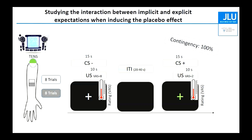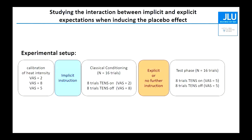We had 100% intensity and a TENS display. Whenever the green cross was presented, the display lit up, so the participant was led to believe the TENS device was functioning. We first calibrated the heat intensity stimulus to give subjective pain intensities of 2, 5, and 8. Then after implicit instructions and classical conditioning — the green fixation cross with TENS on at pain intensity 2, and white fixation cross with pain intensity 8 — one group received explicit instructions: if you see the green cross, you should experience pain relief.